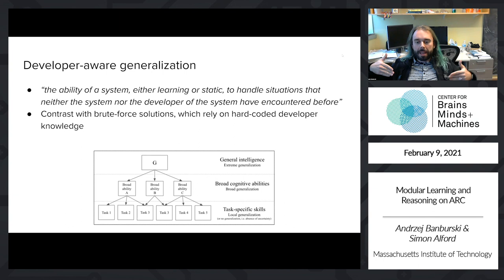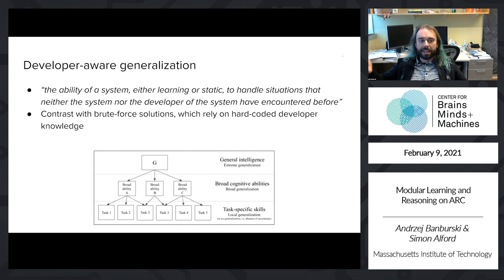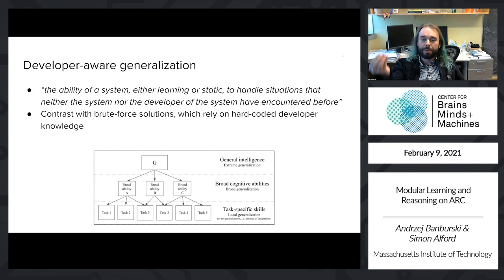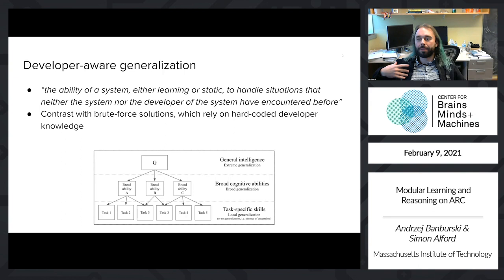You would want systems capable of generalizing to a broader range of variations not encountered before, and in the most extreme sense, a learning system should have 'developer-aware generalization' — handling situations that neither the AI system nor the developer has encountered before. This would require an AI capable of discovering rules and relevant features within a task without being primed for them. The no free lunch theorem might suggest this is impossible, but within the set of tasks we actually encounter in the world, maybe we can do it since we humans are capable of these things.